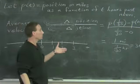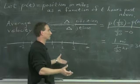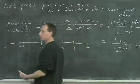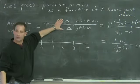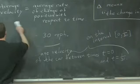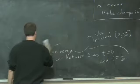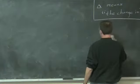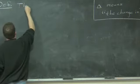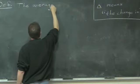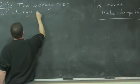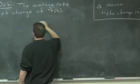In general, suppose something else is changing with respect to something else. We define the average rate of change of one quantity with respect to another in a way that's analogous to this: it's the change in one quantity over the change in the other.